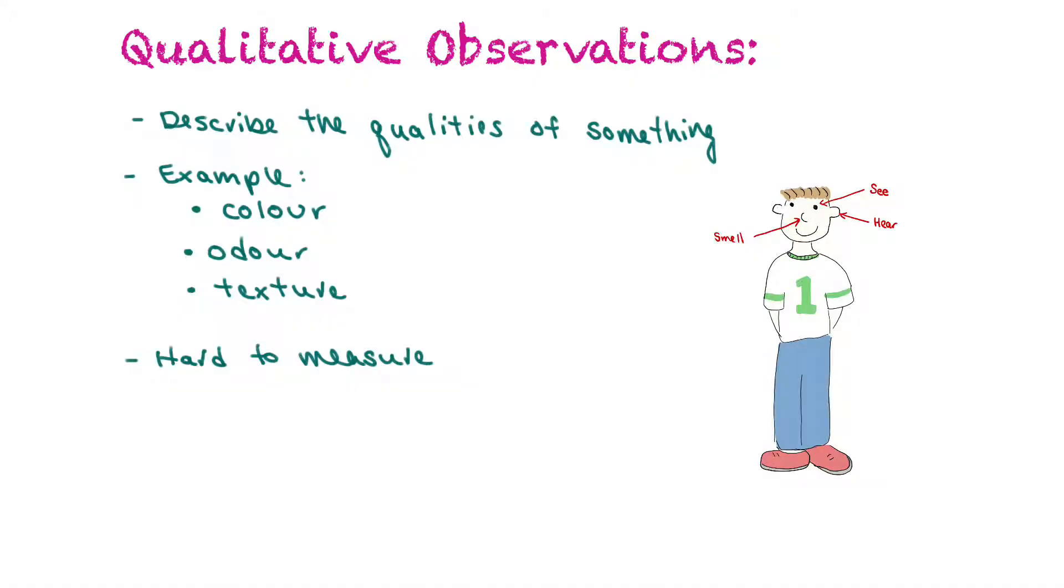Qualitative observations describe the qualities of something. For example you could describe the color or the odor, or the texture, or the scent of something. Now these types of observations are hard to measure.